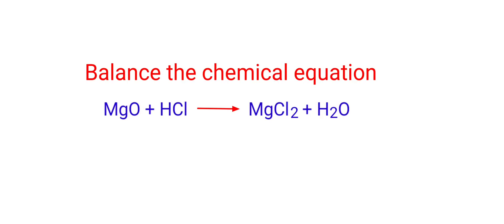Balance the Chemical Equation. Magnesium Oxide plus Hydrogen Chloride gives us Magnesium Chloride plus Water.